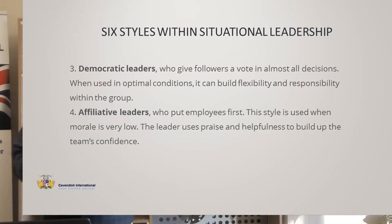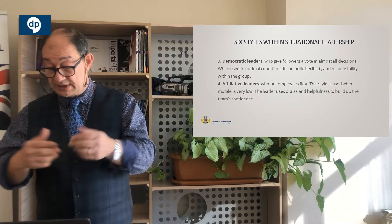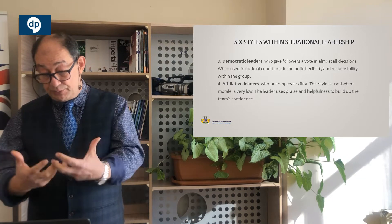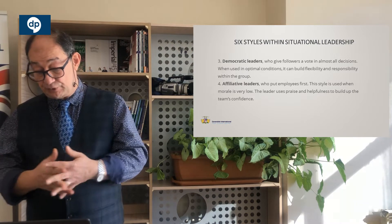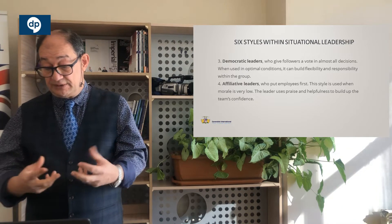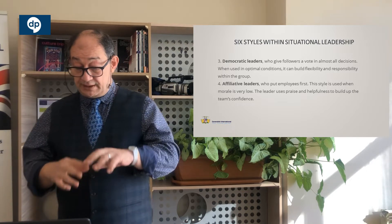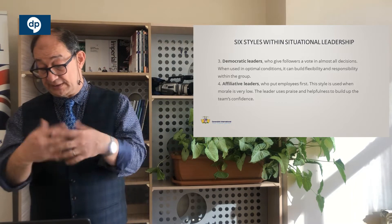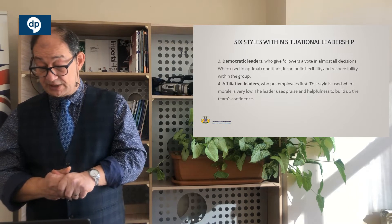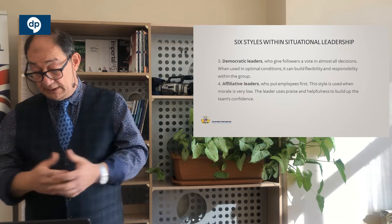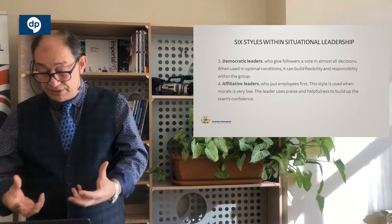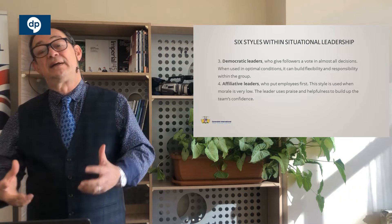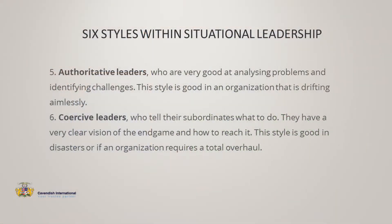Then you have the democratic leaders. As discussed earlier, they give the followers a vote in almost every decision; input comes in and the optimal decision is taken, which can build flexibility and responsibility within the group. Then you have the affiliative leaders — they put their employees first and look at their well-being. This style is used when morale is low, the situation is not very good, and you need to rebuild a team which is not performing effectively.